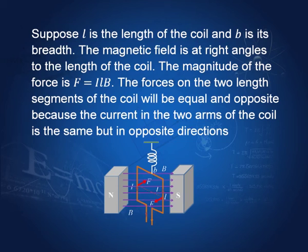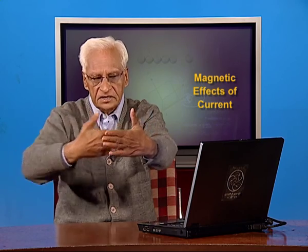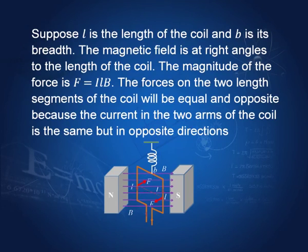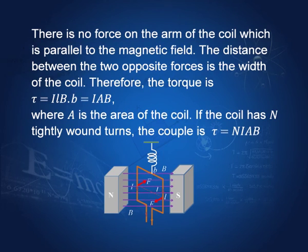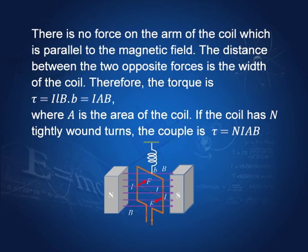We have a coil perpendicular to the magnetic field. Using the right hand screw rule, if this is the direction of current, then the force due to the magnetic field on one side is outwards and on the other side is inward — two equal and opposite forces forming a couple. The arm of the couple is equal to the width of the coil, which is B, and the force is I L B. The torque is therefore I L B times the arm, giving torque equal to I A B, where A is the area of the coil (L times B). If there are N turns, the torque is N I A B.